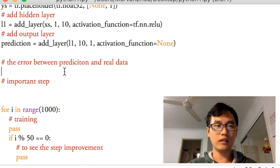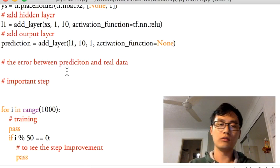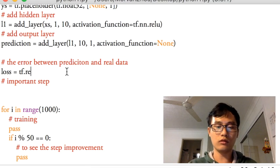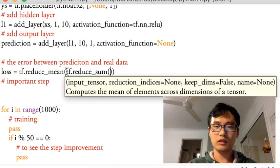And in here, we're going to calculate the area. There are errors between the prediction and real data. So this is the loss or error, you can use either word to describe this one.